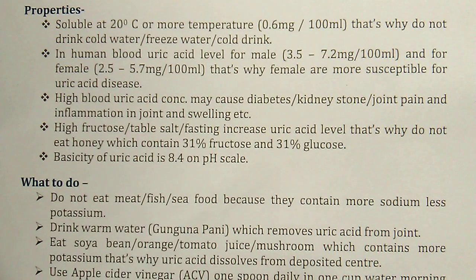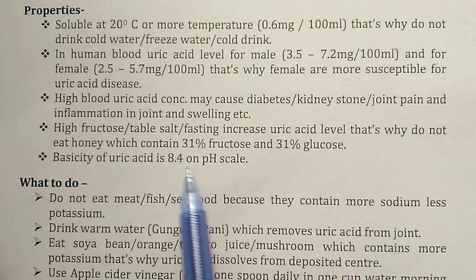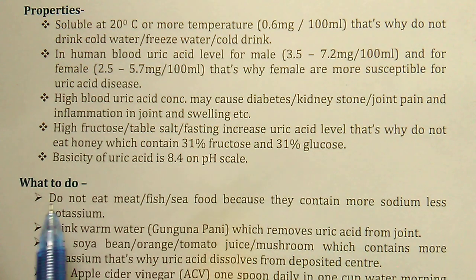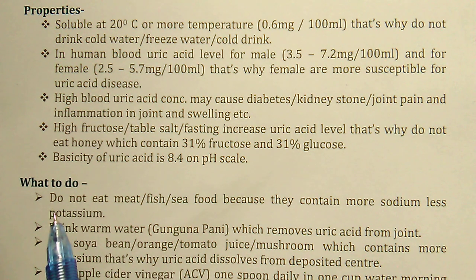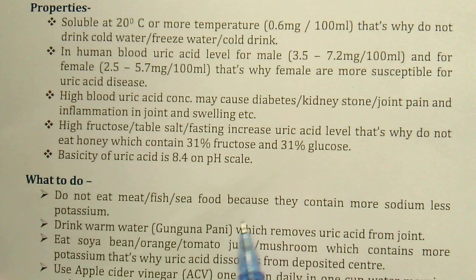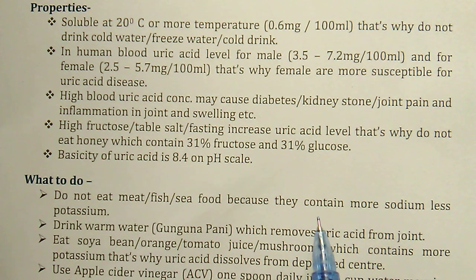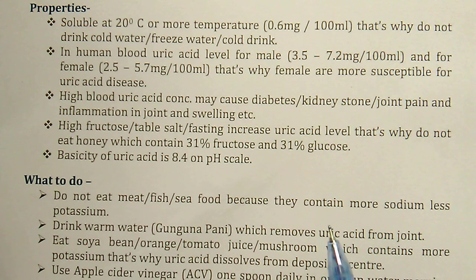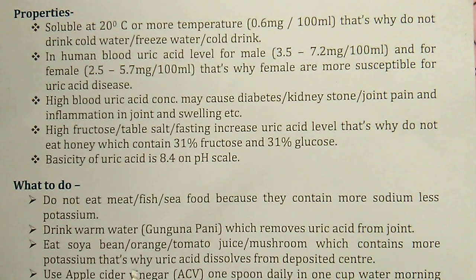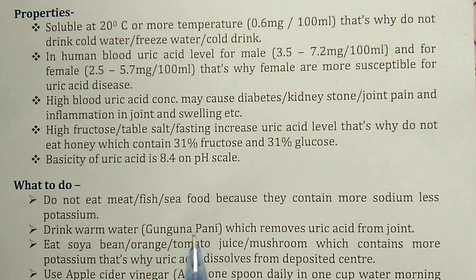The pH of uric acid is 8.4 on the pH scale, and the acidity is 14 minus 8.4, which equals 5.6. To remove uric acid from the body: do not eat meat, fish, or seafood, because they contain more sodium and less potassium. Always eat foods that contain more potassium and less sodium. Drink warm water, which helps remove uric acid from joints, since solubility is facilitated at 20 degrees Celsius or above.